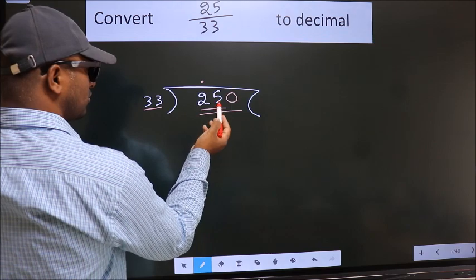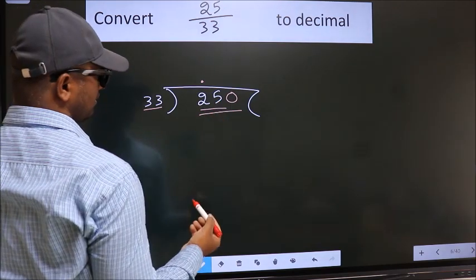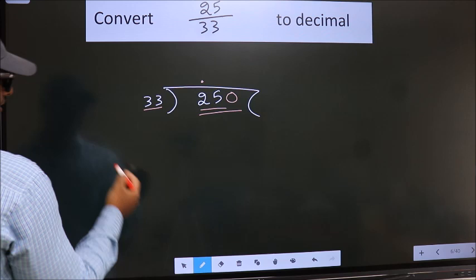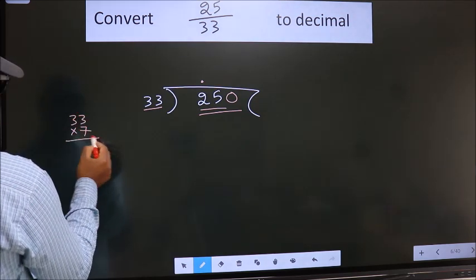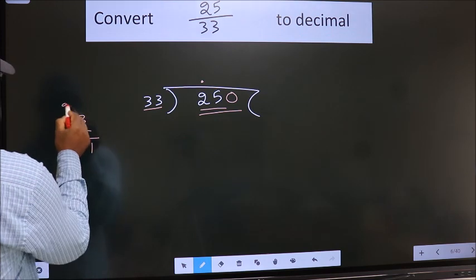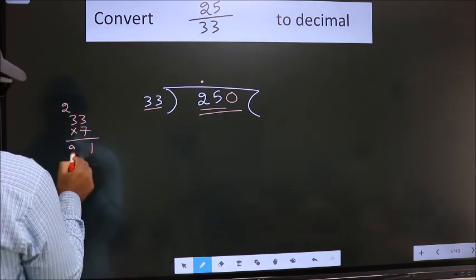A number close to 250 in the 33 table is, let us check with 7. 33 times 7: 7 times 3 is 21, 7 times 3 is 21 plus 2 is 23.